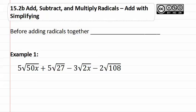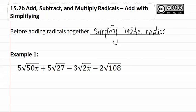15.2b: Adding with Simplifying. Before adding radicals together, we must simplify inside the radical. So let's first start by looking at example one.